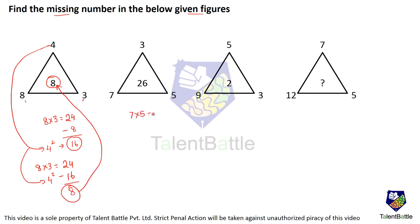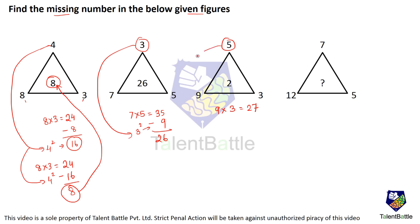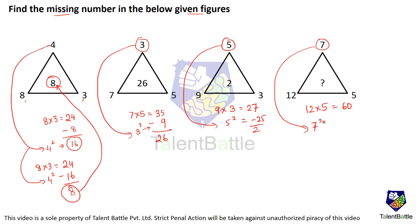We check: 7 into 5 is 35, minus 9 which is 3 squared — 3 squared is 9 — comes out to be 26. Again, 9 into 3 is 27, minus 5 squared: 27 minus 25 comes out to be 2, which is at the center. So same way, 12 into 5 is 60, and 60 minus 7 squared — 7 squared is 49 — so 60 minus 49 comes out to be 11. The answer is 11; the question mark is 11.